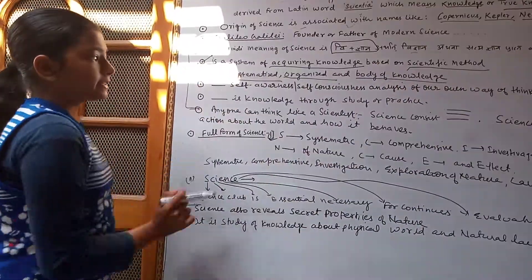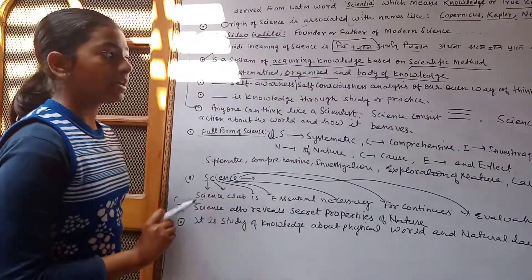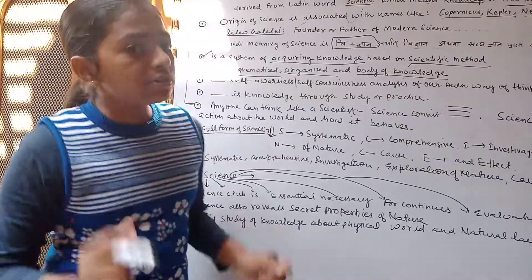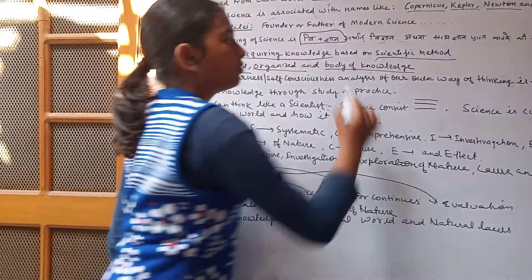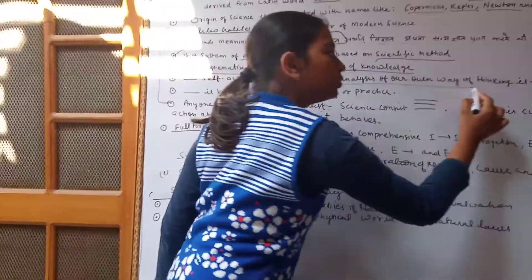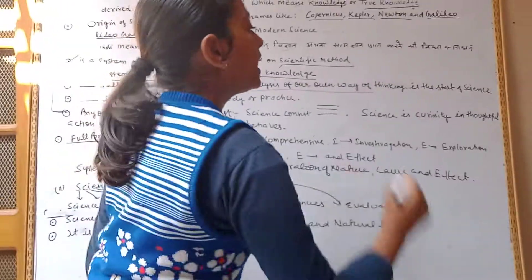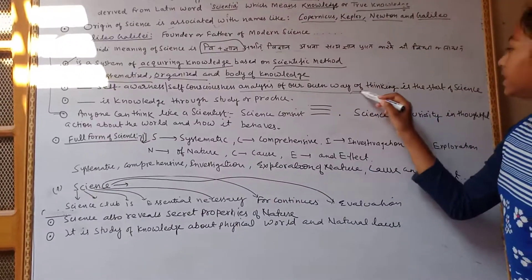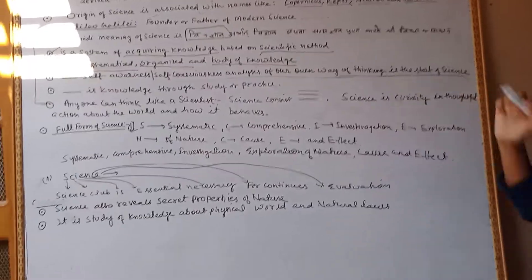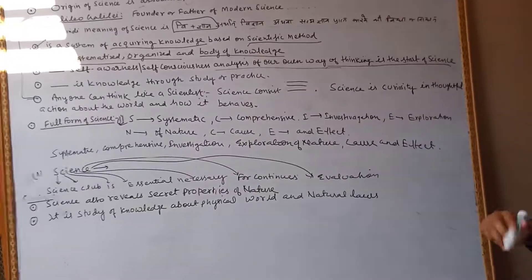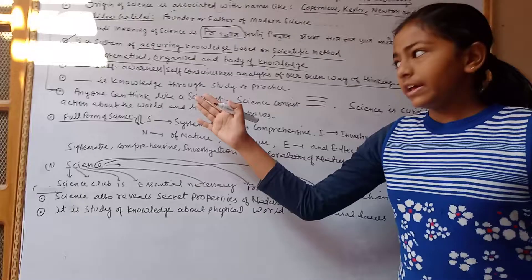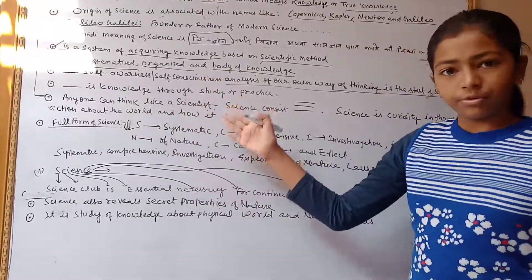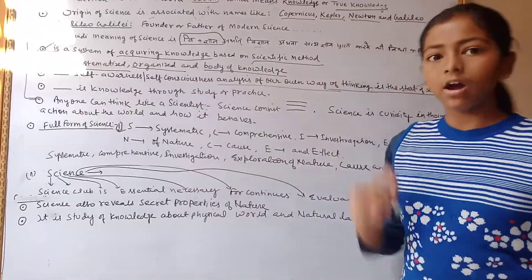Science is self-awareness and self-consciousness. Analysis of our own way of thinking is the start of science. Science is knowledge through study or practice.